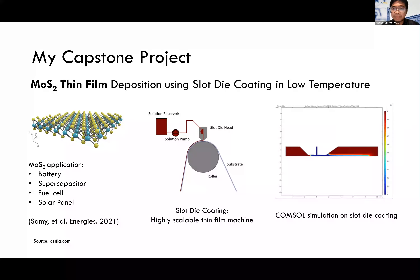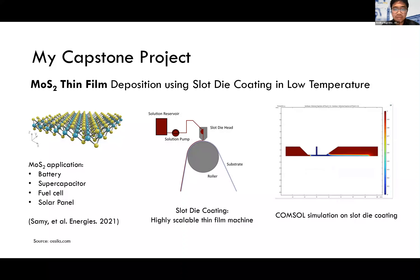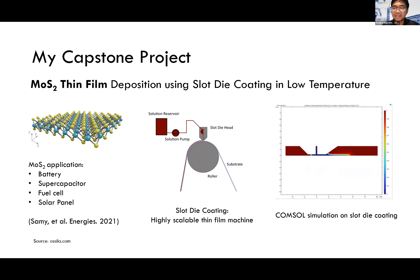If you know a paper printer, it's basically the same thing — instead of ink they release a semiconductor thin film on a substrate. I was also given a task to simulate the slot-die coating using a COMSOL simulation, so through the simulation I could determine the right properties of the ink solution to achieve a uniform thin film on the substrate. About the MoS₂ material itself, Evan could explain it better, so I'll pass it to him later.